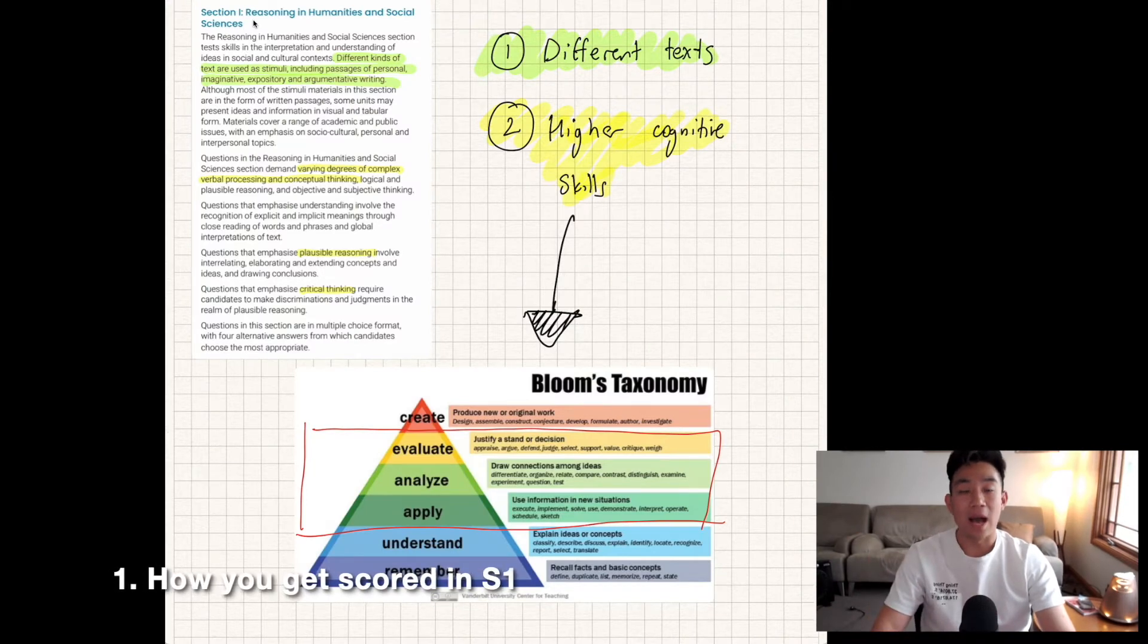Let's go through how ACER scores you in Section 1 of the GAMSAT. I pulled an excerpt from their booklet, and I urge you to read it because it shows you what kind of questions they're going to put in. I think there are two things that are significant, which I've highlighted. The first is in green: different kinds of texts they use as stimuli, including passages of personal, imaginative, expository, and argumentative writing.